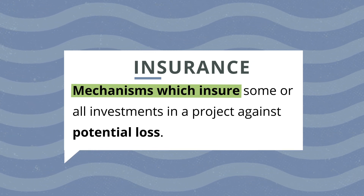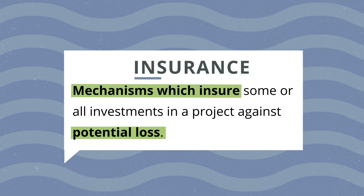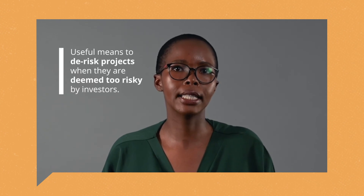The fourth type of capital financing we'll look at is insurance, also referred to as guarantees. Insurance or guarantees are mechanisms which ensure some or all investments in a project against potential loss. A regular payment is made based on the project's risk profile and pays out in the event of an incident. This mechanism is generally underutilised in South Africa and is not well reported. Insurance type mechanisms are a useful means to de-risk projects when they are deemed too risky by investors. This way, a small amount of financing used to pay for insurance can help leverage substantially larger amounts of financing from other private or commercial investors.